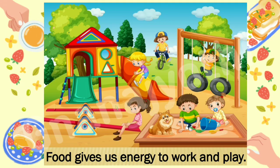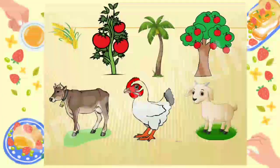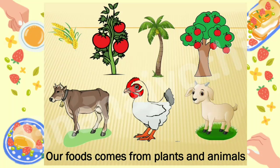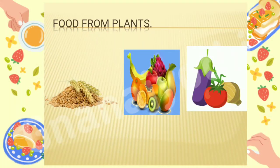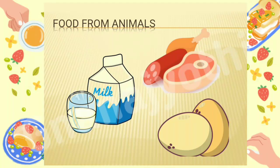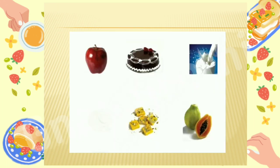Now children, can you tell me from where we get food? Our food comes from plants and animals. Food from plants includes grains, vegetables, and fruits. Food from animals includes milk, eggs, meat, and more.